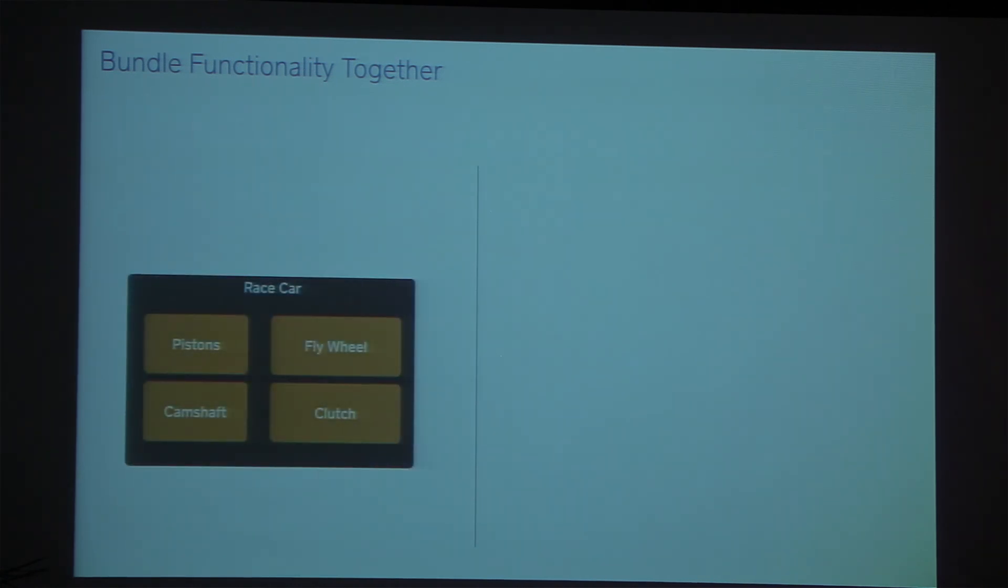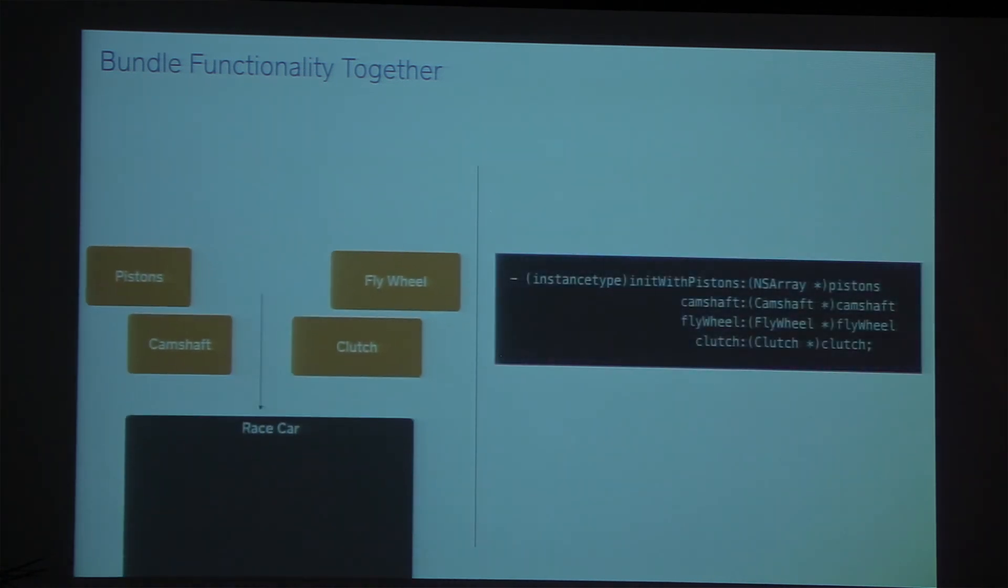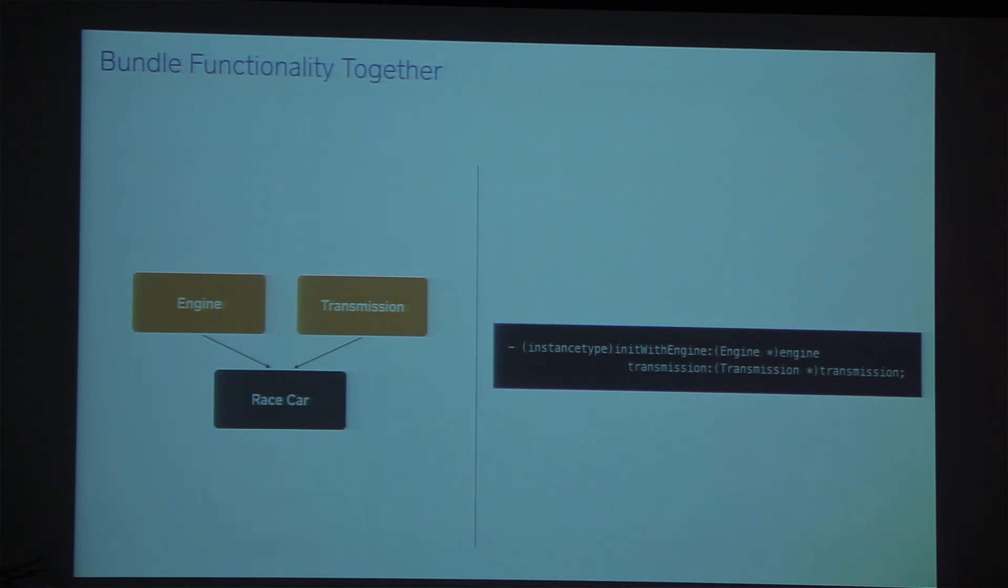As you do this, you're going to start to add more and more arguments to your initializers. And what you can do is start to simplify that down. So if you're adding more than about three arguments to your initializers, start to figure out ways that you can logically combine them, and the layers will fall out sort of naturally. So in our old code, like I said, we had a race car, everything's done internally. As we separate those out, we have an initializer with a bunch of arguments. But you'll notice that a camshaft and a piston are part of an engine, a flywheel and a clutch are part of a transmission. So we can go ahead and bundle those together into more objects. And you can actually move some of the logic that makes sense in those objects out as well.